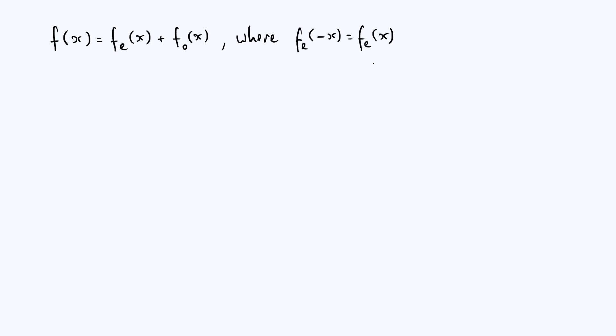Where if you flip the sign of the argument x, then the value of the function itself is unchanged. That's the defining property of an even function.